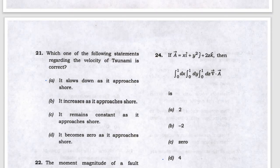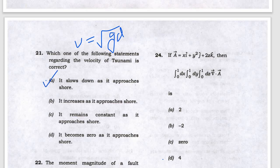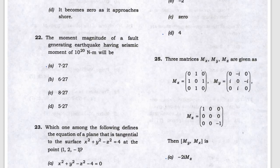Next, which statement regarding tsunami velocity is correct — the formula is v = √(gd). As the shore is approached, g is constant but depth is decreasing, so velocity will slow down.